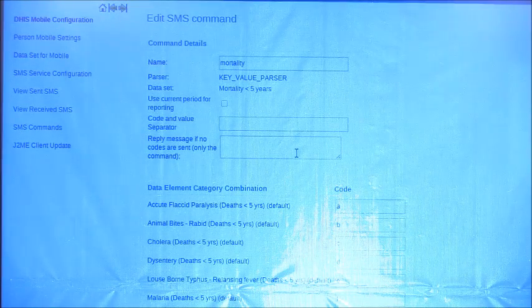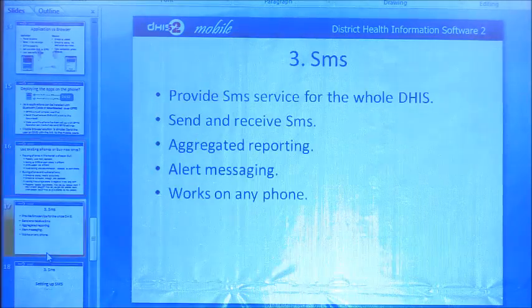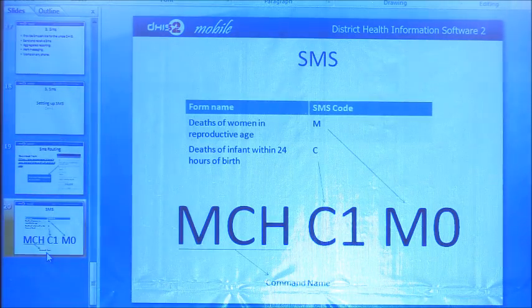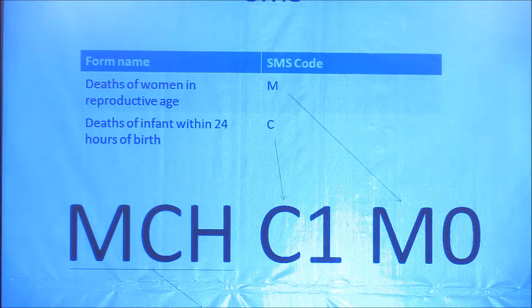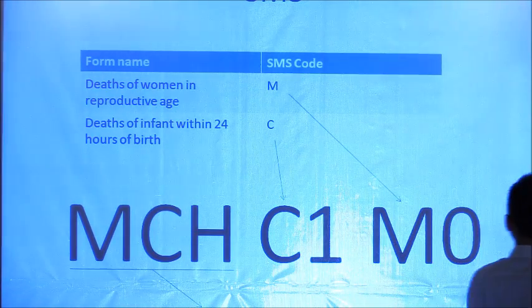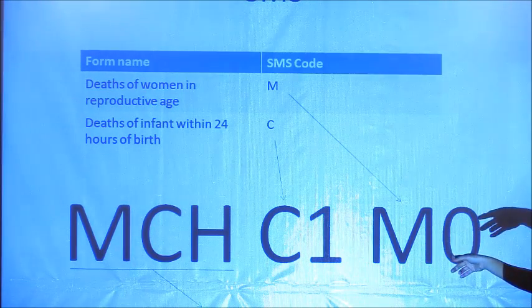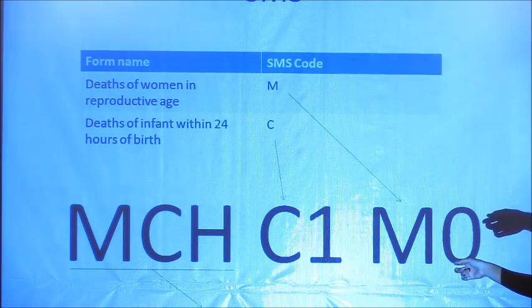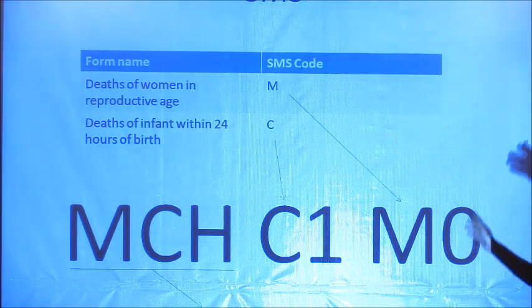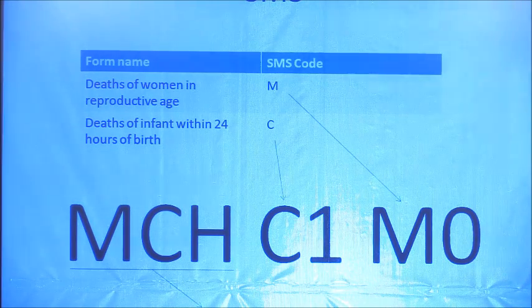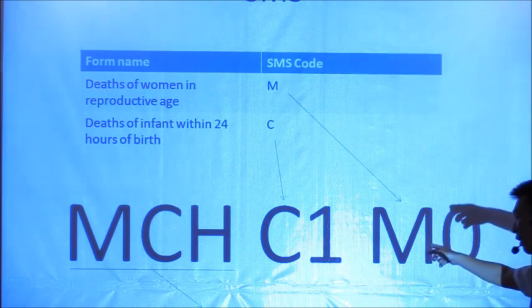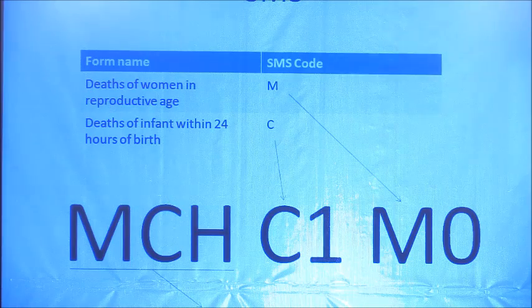Once the SMS command is set up, sending a report is straightforward: the SMS format is the command name, then a space, followed by code-value pairs. For example: mortality A1 B2 C3 — the command name, then each code immediately followed by its value, separated by spaces. Continue adding code-value pairs and when you send it, it works normally.